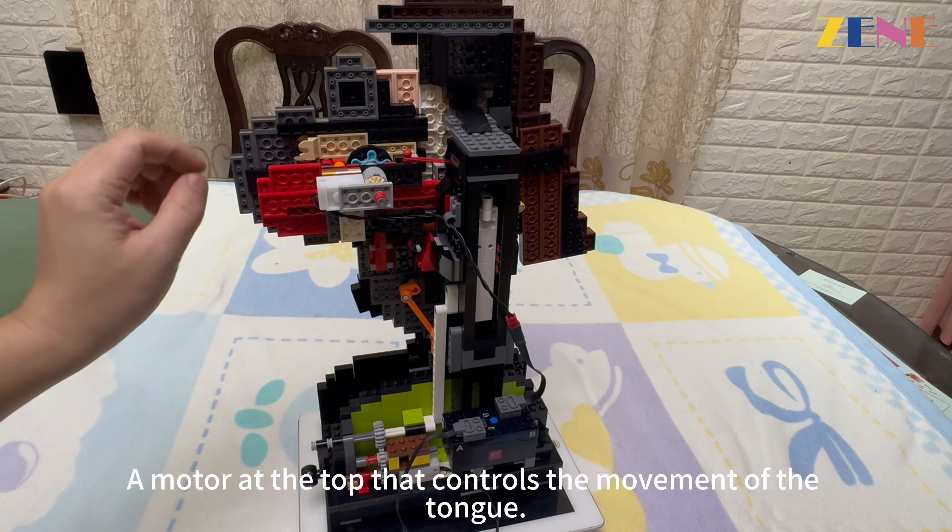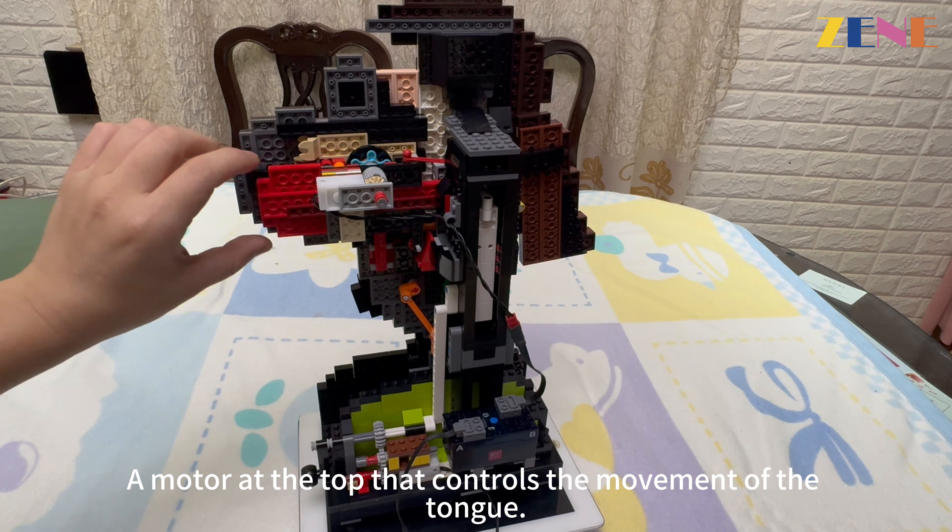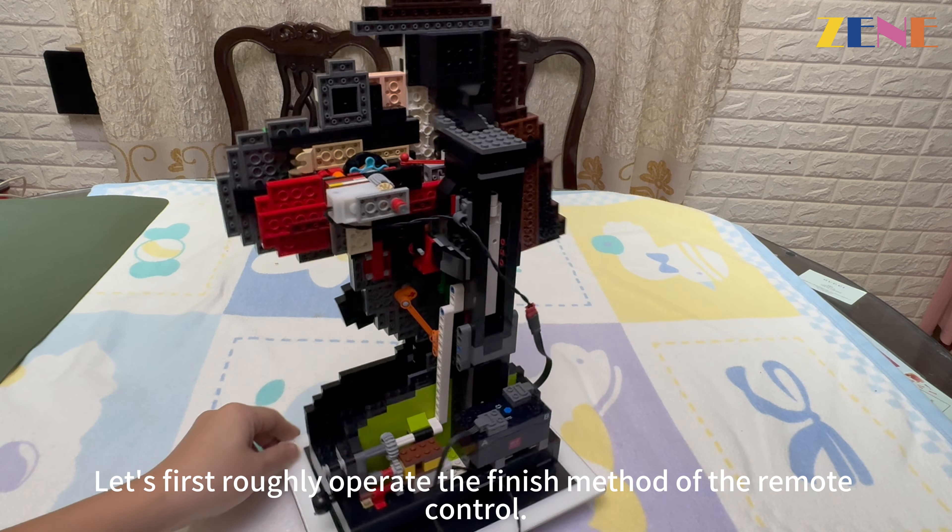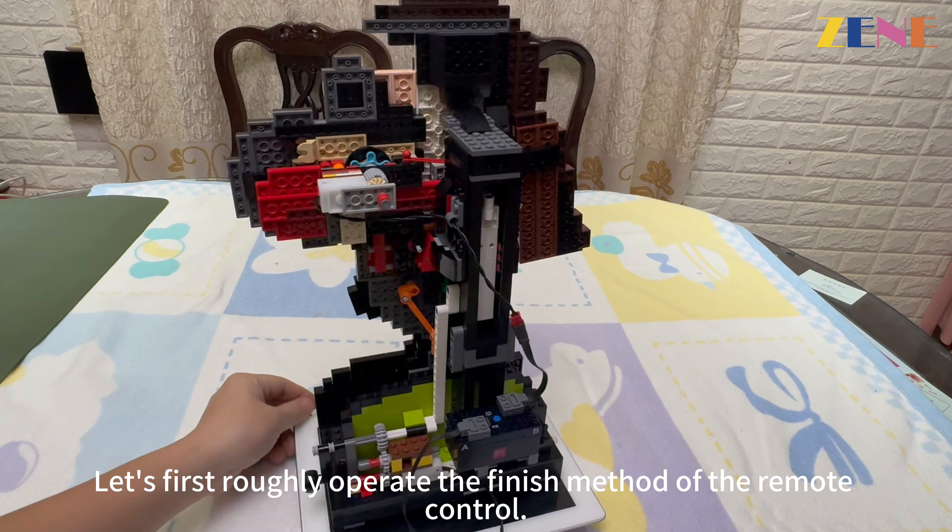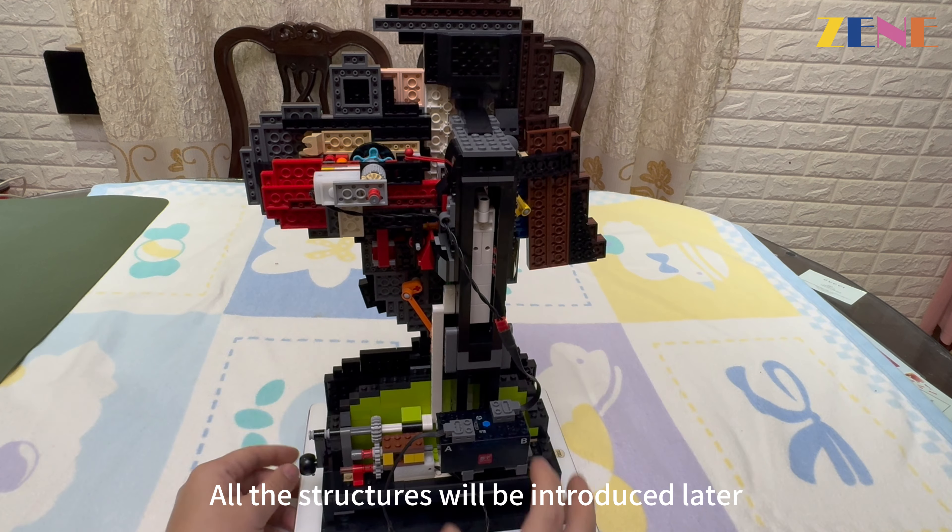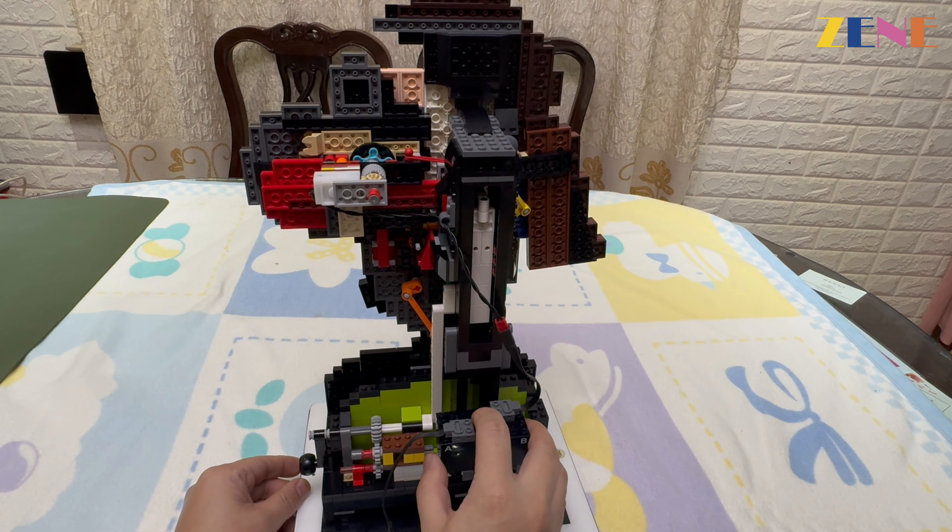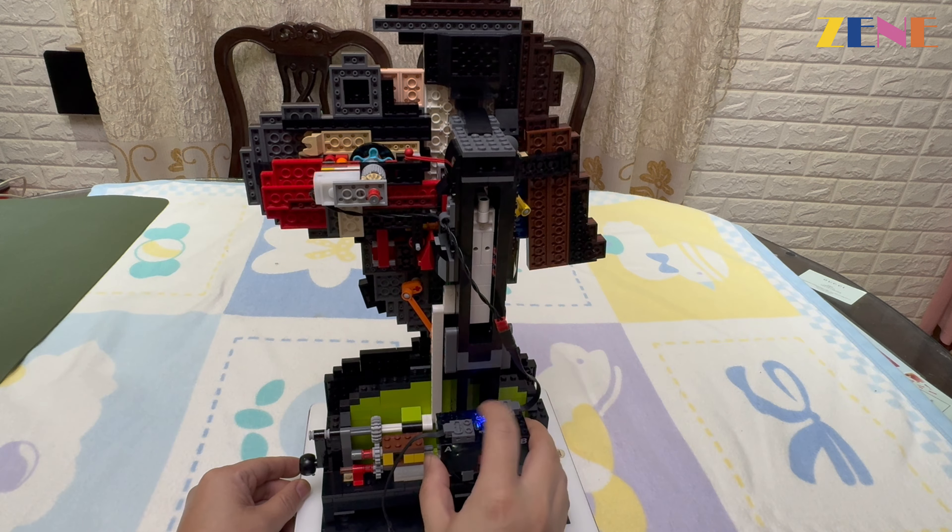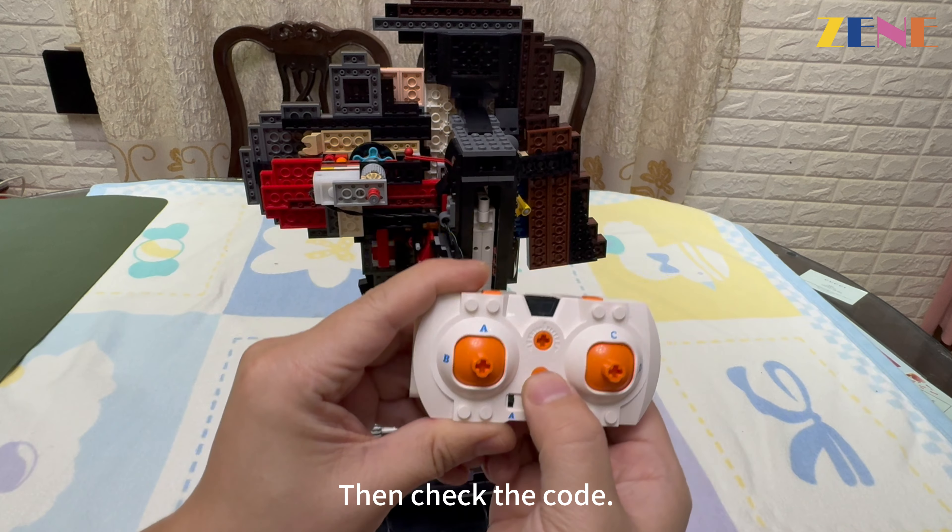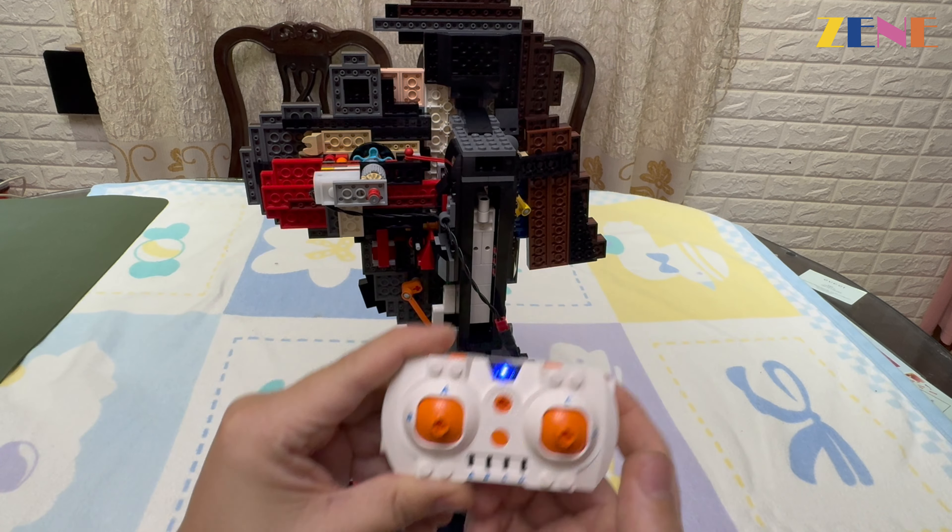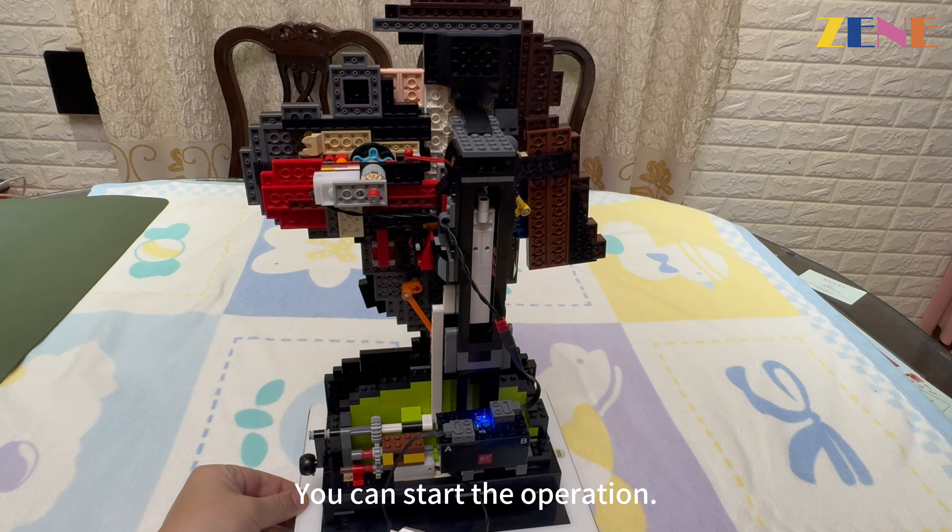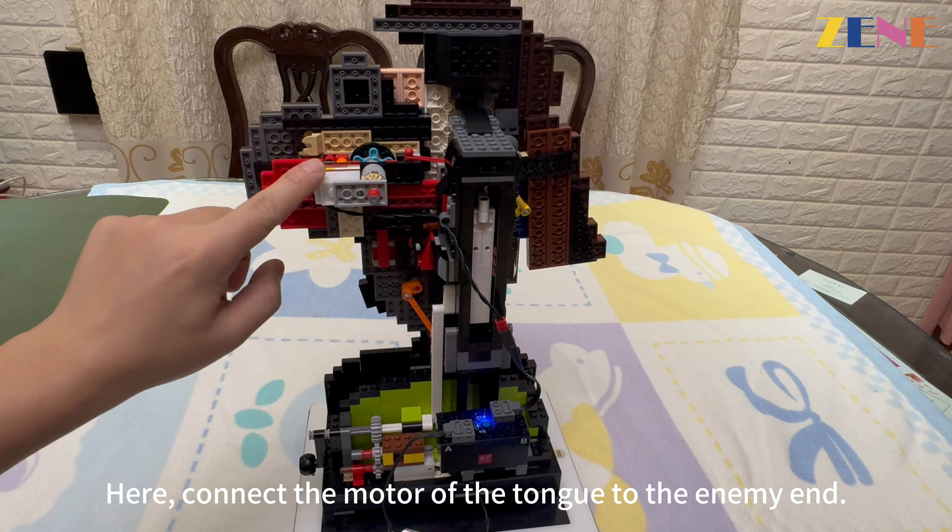Let's first roughly operate the finishing method of the remote control. Turn on Bluetooth first, then check the code. When the lights stop blinking, connect the motor of the tongue to the D end because the D is controlling.